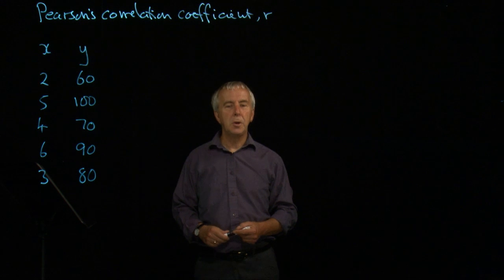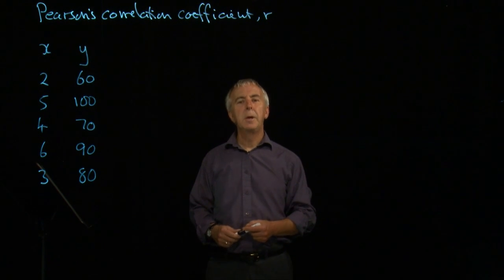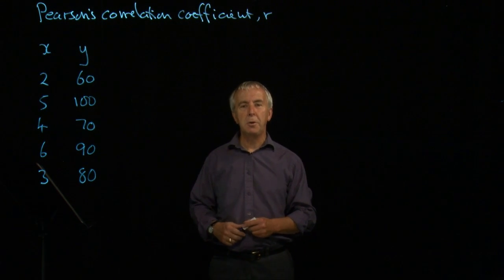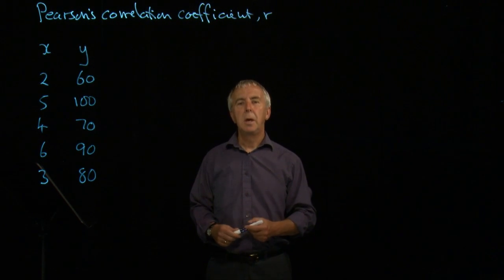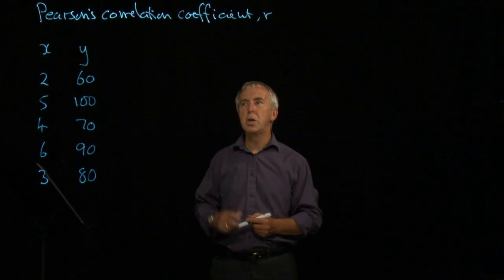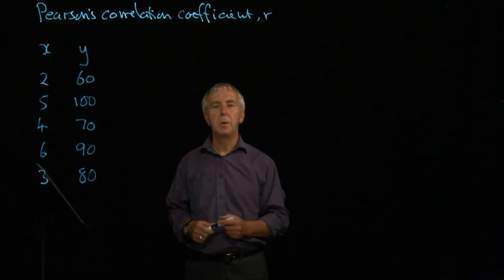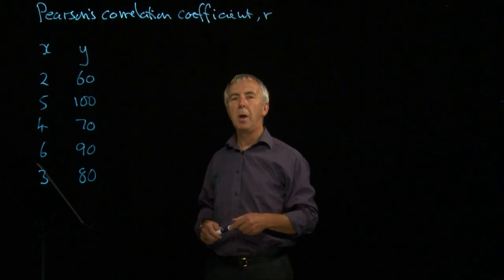The rank correlation coefficient introduced by Spearman has limitations in that it does not consider the original data, it just considers positions. A more precise measure of correlation is Pearson's correlation coefficient, which is normally given by the symbol r.